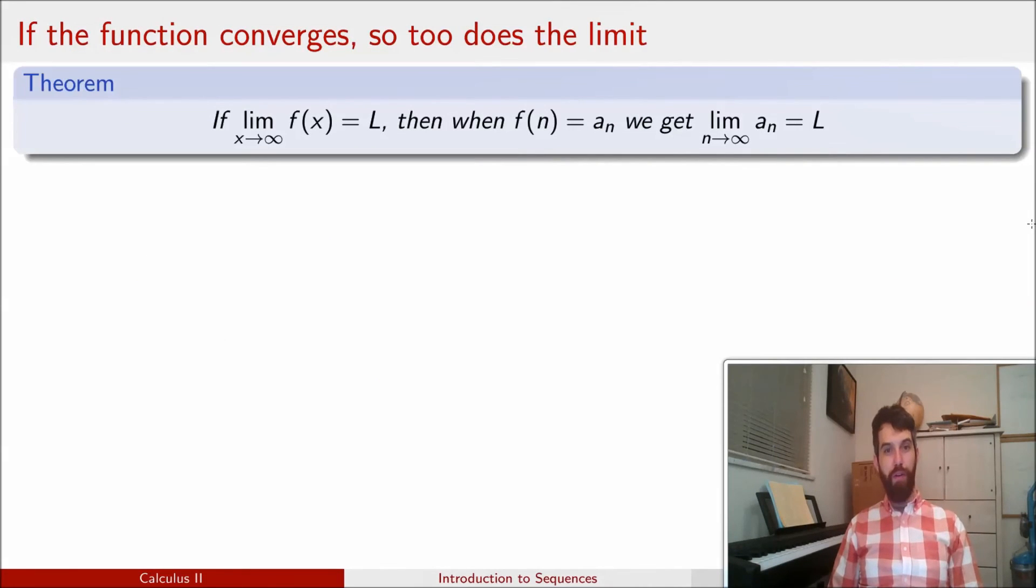Indeed, we can formalize this relationship between a function and a sequence and their convergence by saying that if it is the case that the limit as x goes to infinity of a function converges to L, then if the sequence is just one that comes from that function, if f of n is equal to the a_n's, then so too must it be that the limit of the a_n's, as the n goes to infinity, has to equal L.